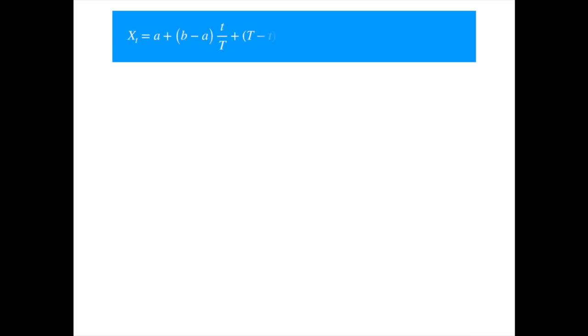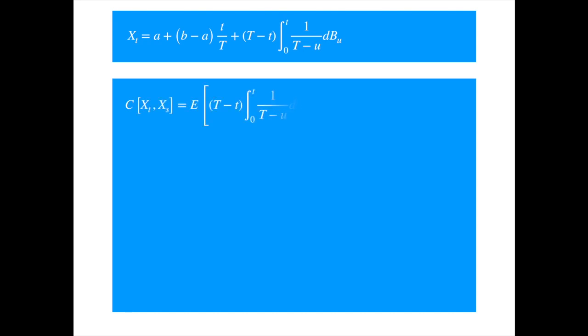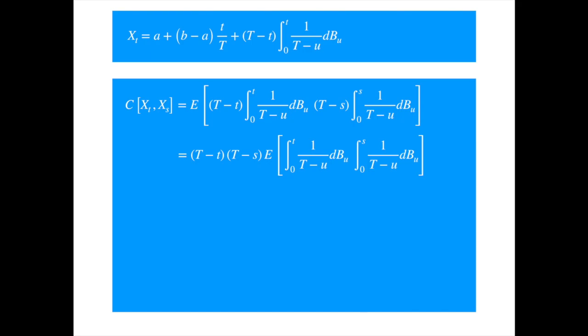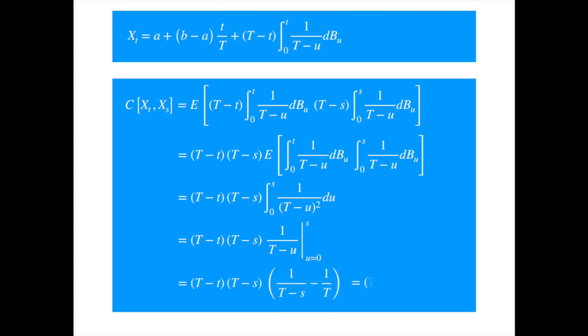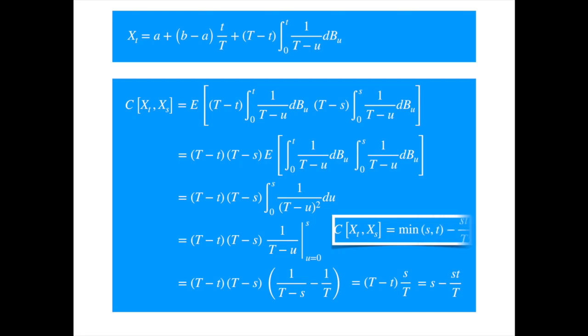Now let's calculate the covariance between the value of the process at two times, say t and s. Recall that the covariance is the expected value of the product of the stochastic terms. Taking the known terms out of the expectation, assuming s is smaller than t, and applying Ito's isometry, we get the integral. Plugging in the limits, combining the terms, and simplifying, we get the covariance formula. If we had assumed t to be smaller than s, then the first term of the solution would have been t instead of s. We can thus write the more general solution.